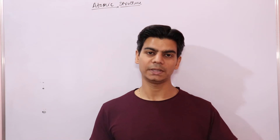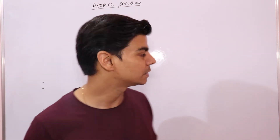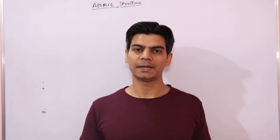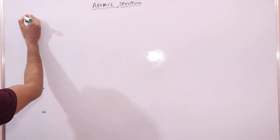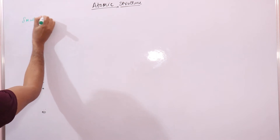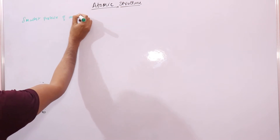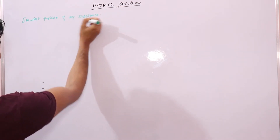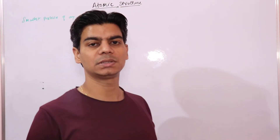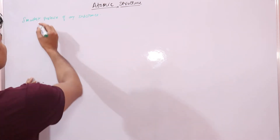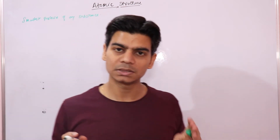Now we will look into the advanced version of all the things we studied in class 9th in the Structure of Atom. From our junior classes, we have studied that the definition of atom states that an atom is the smallest particle of any substance. Some definitions also say that atom is the smallest particle of an element.